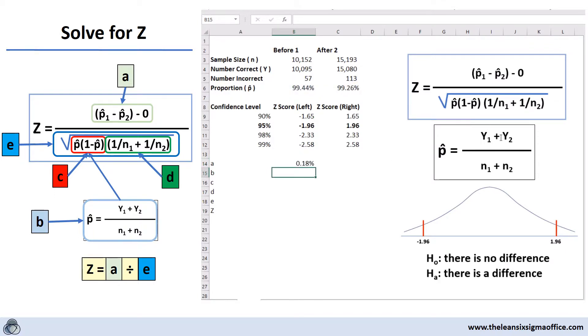Now what we've got to do is we've got to calculate this p hat. The p hat is nothing more than the proportion of the total population. Alright, so that's p hat.